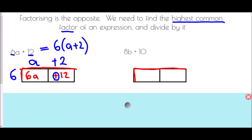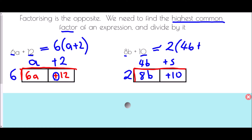For 8b + 10, we write those values into the boxes and decide what divides into both 8 and 10. Only 1 or 2 work, so we go with the highest: 2. 2 divides into 8b giving 4b, and 10 divided by 2 is 5. Factorized version: 2(4b + 5).